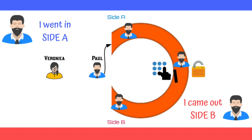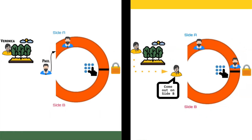Paul wants to prove to Veronica that he knows the passcode without revealing what the code actually is. All Paul has to do is enter one direction of the cave, with Veronica watching, and come out the other side. Let's complicate things. Imagine that Veronica does not see Paul enter the cave. Once Paul enters the cave, he chooses which direction to go. Veronica then walks to the mouth of the cave and directs him which way to exit.